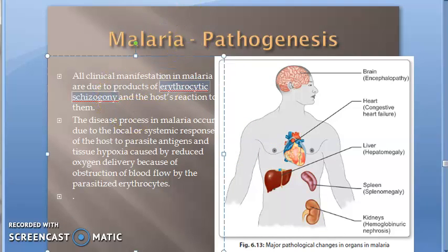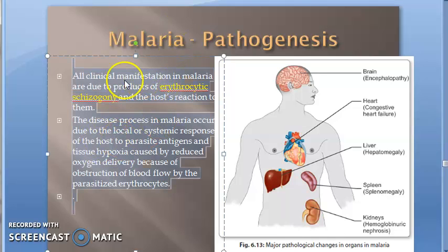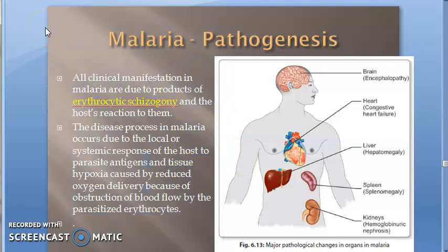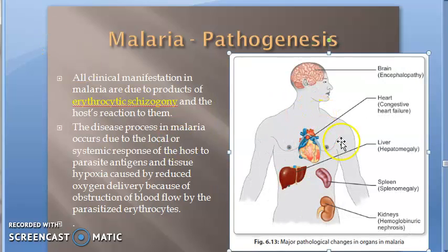The disease happens because of erythrocytic schizogony. When an RBC ruptures and merozoites are released into the circulation, that is when clinical manifestations occur. The liver and gametocytes don't cause an issue — it is the RBCs containing merozoites which rupture, and that is when clinical manifestation happens.